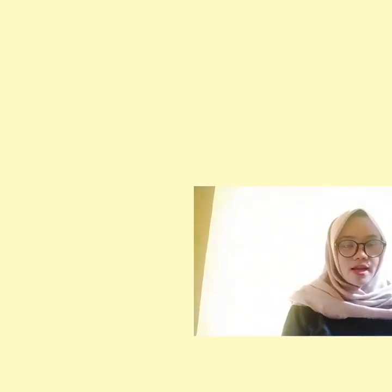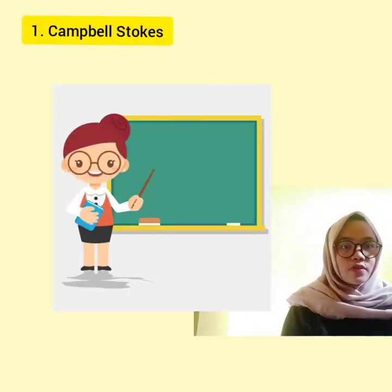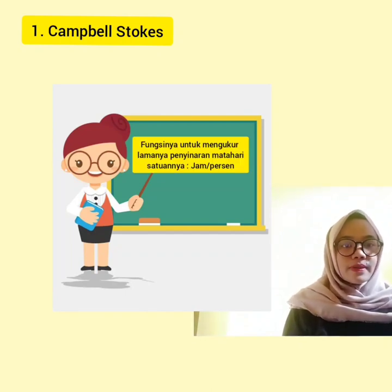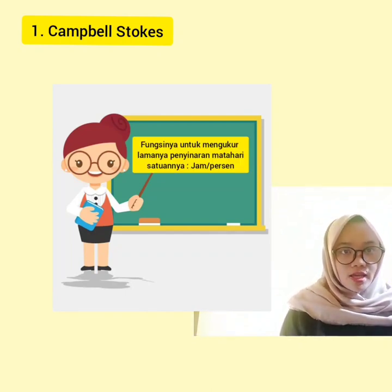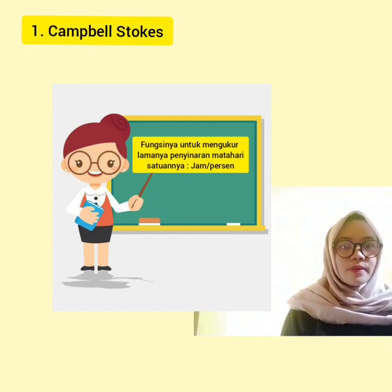Yang pertama adalah Campbell-Stokes atau kampeostok. Satuannya jam. Fungsinya untuk mengukur lamanya penyinaran matahari. Biasanya ditempatkan di ruangan yang terbuka.